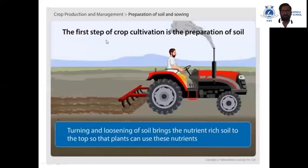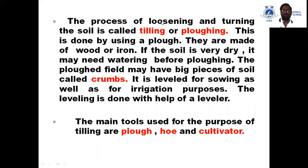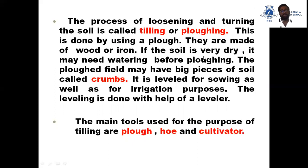A few centimeters of the top layer of soil support plant growth. Turning and loosening of the soil brings the nutrient-rich soil to the top so that plants can use these nutrients. Thus, it is important to prepare the soil. The process of loosening and turning the soil is called tilling or plowing. This is done by using a plow. They are made up of wood or iron. If the soil is very dry, it may need watering before plowing.